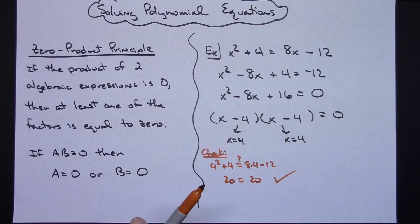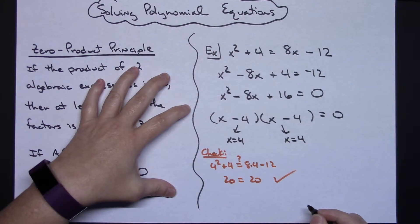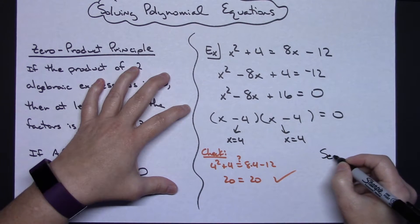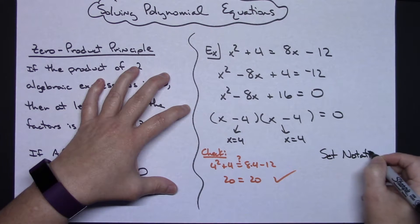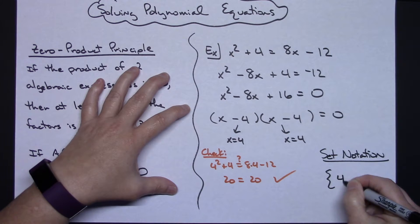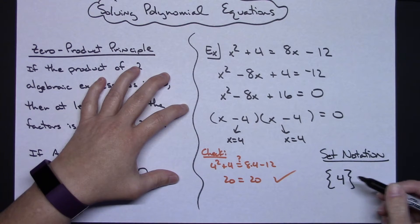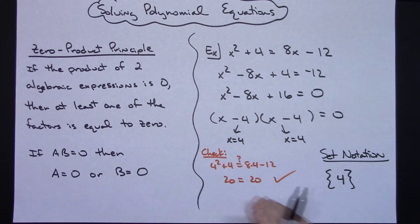Whenever you solve one of these polynomial equations, you should always check your answers, because you could have some extraneous roots down there. Now if you need to put this in, say, a set notation or write it as a solution set, because we could possibly have more than one answer, it's going to look something like that. So x equals 4 on this first one.